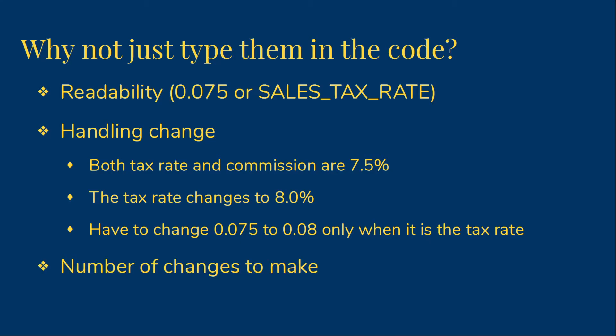The last reason to avoid typing the numbers in code also has to do with those inevitable changes. It's common for such values to appear in multiple places in your code. If we type the numbers into the code, we have to find every case of the value and change it. With named constants, we will be able to change the value only once.